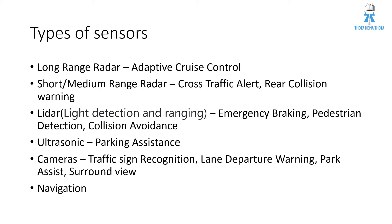We have basically a long-range radar that is used for adaptive cruise control, short or medium range radar which is used in cross traffic alert and rear collision warning. The third one is LiDAR — Light Detection and Ranging — which is used for emergency braking, pedestrian detection, and collision avoidance.